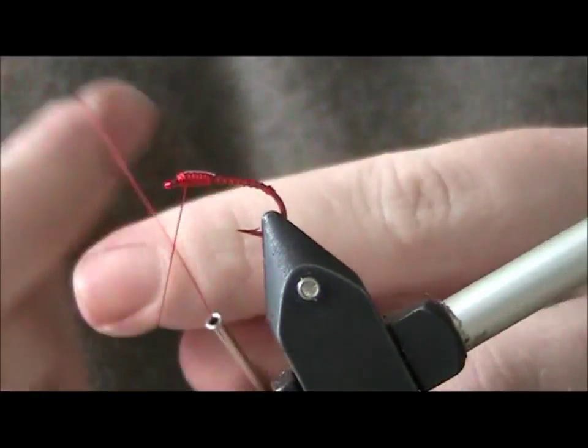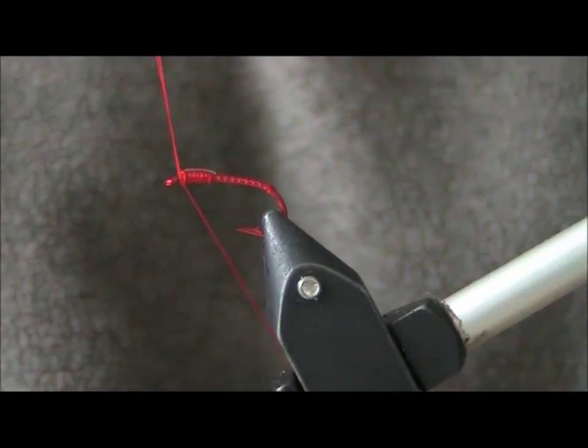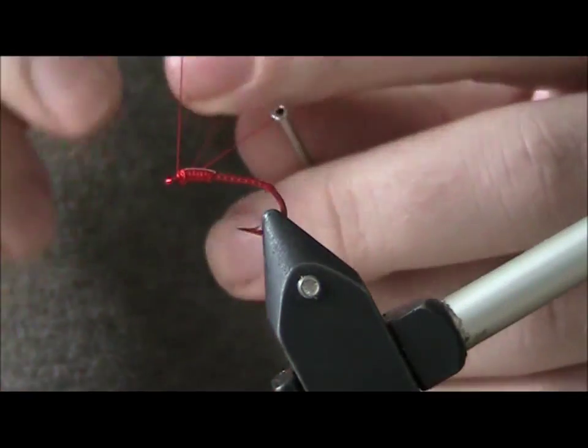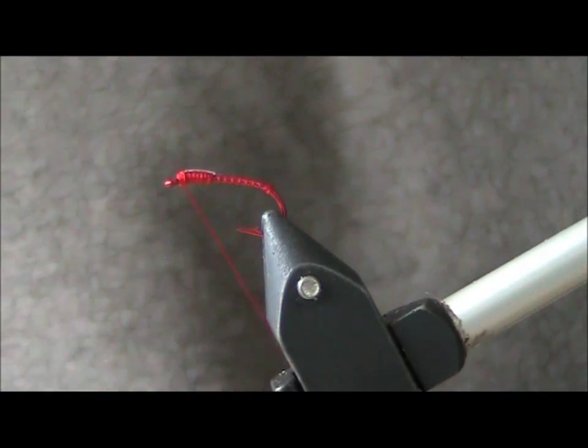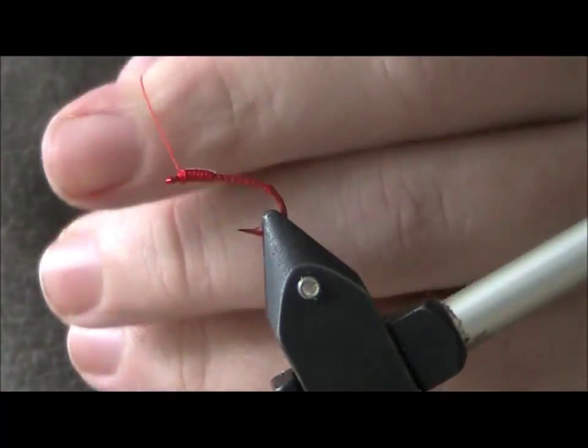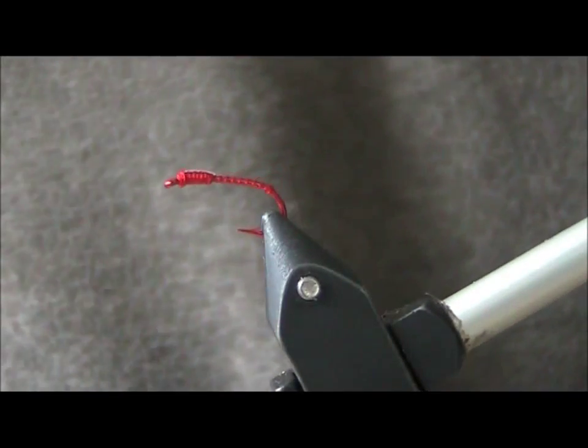We're going to varnish this, so you can whip finish or half hitch it. It really makes no difference at all to the fly. I'm going to go for two half hitches like so. Cut off the thread, and then I'm going to varnish it.